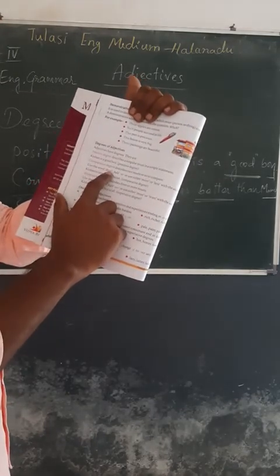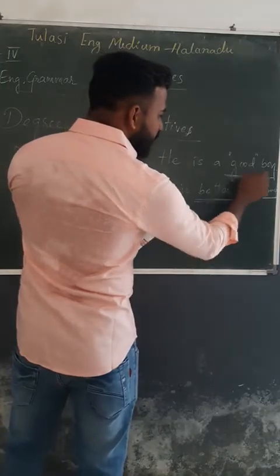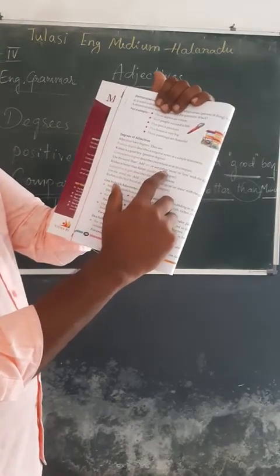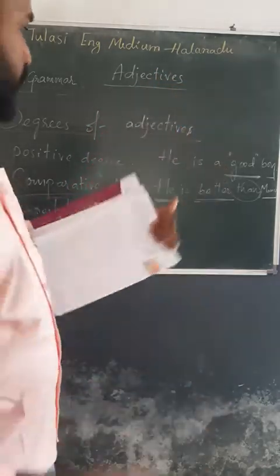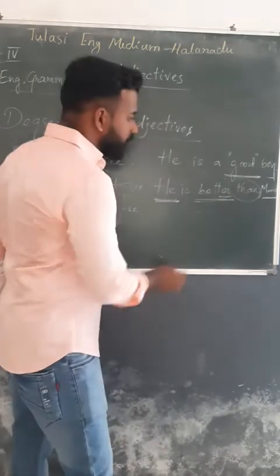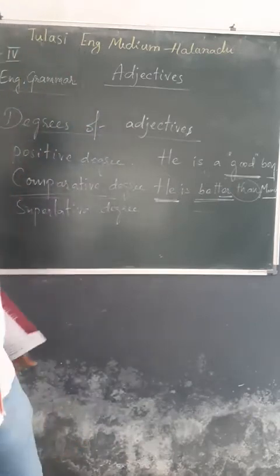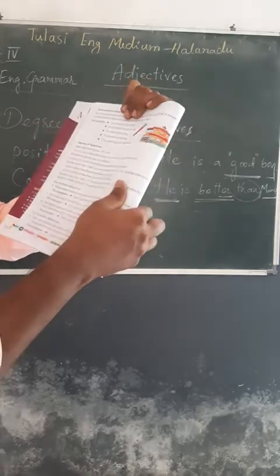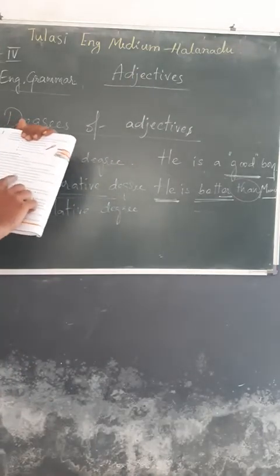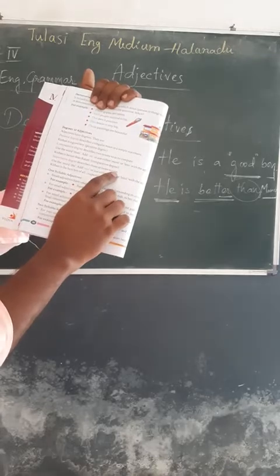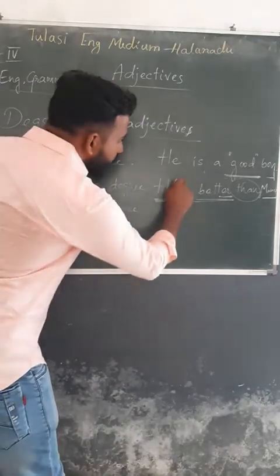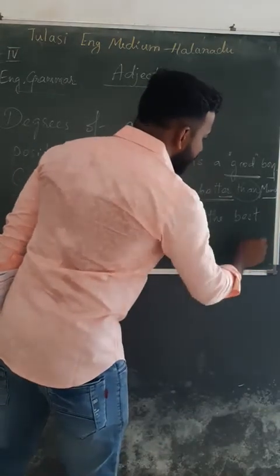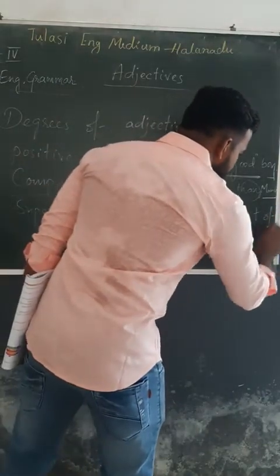In comparative degree, we use 'than' and add -er or use 'more'/'less' with the adjective. In the superlative degree, it describes three or more nouns — it is the ultimate, highest level. For example: 'He is the best of all.' Here we add -est and use 'the' before the adjective, or use 'most'/'least' with the adjective.